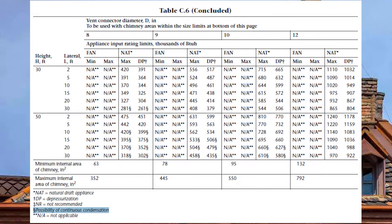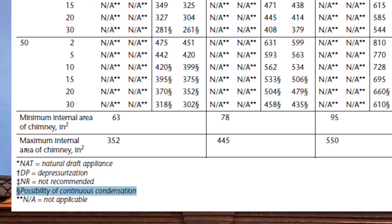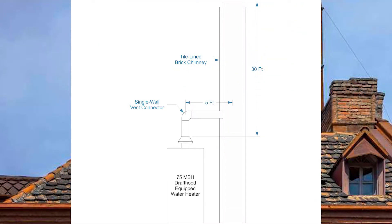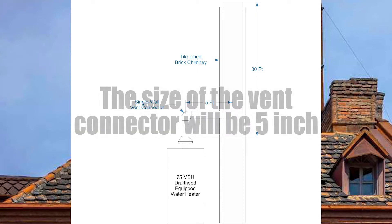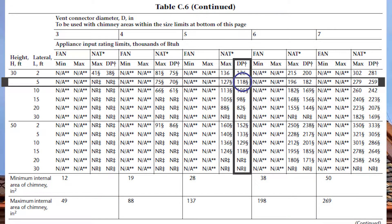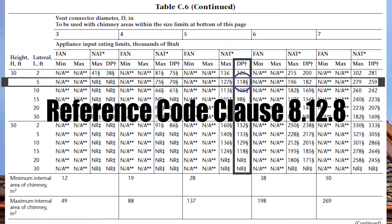We need to look at that symbol. Scroll all the way down to the bottom of table C6 to the legend on the bottom left. This symbol indicates a possibility of continuous condensation, and as discussed in previous videos, condensation in brick chimneys is bad. Regardless, our vent connector size is still 5 inch — this symbol does not mean we can't do this; it's a warning. We definitely need to do a mathematic check from code clause 8128.